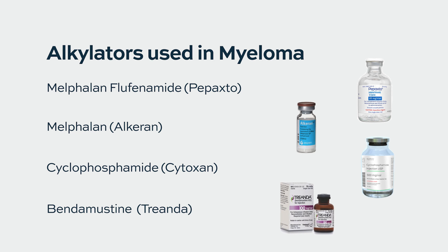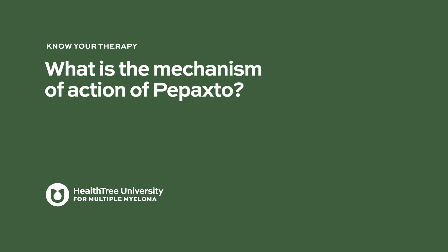The alkylator bendamustine will sometimes be used in combination therapies for patients with relapsed refractory multiple myeloma. What is the mechanism of action of Pepaxto? Melphalanflufenamide is a novel spin on an old idea — that old idea being alkylator therapy for multiple myeloma.